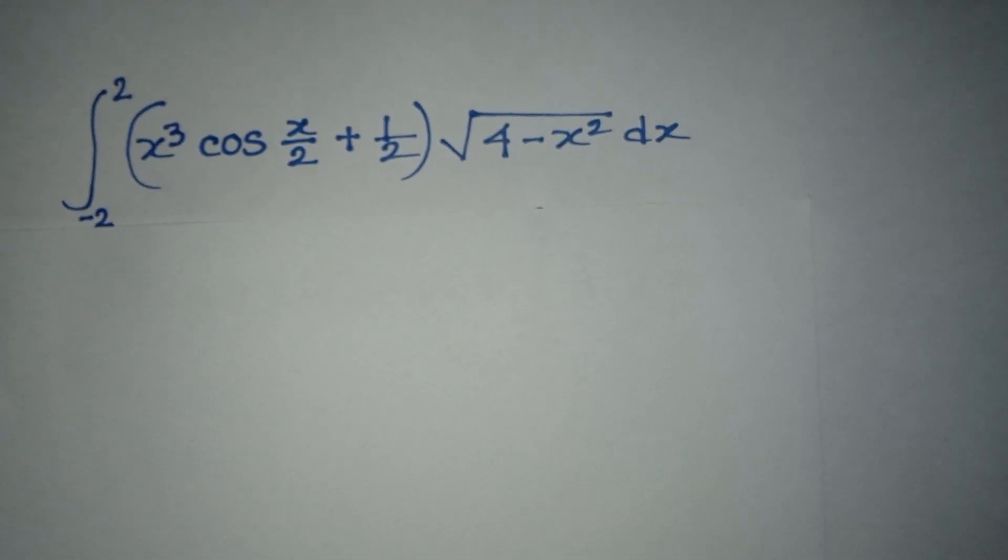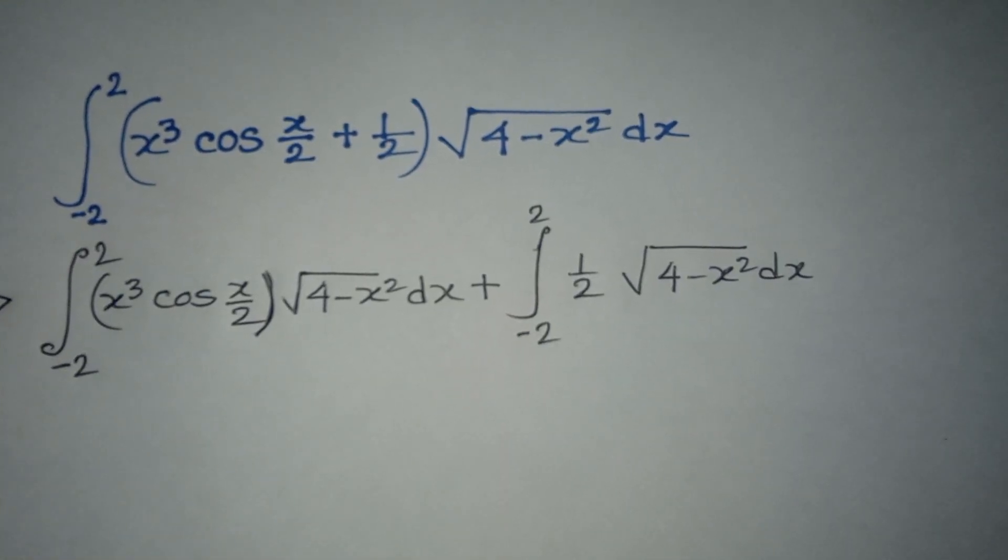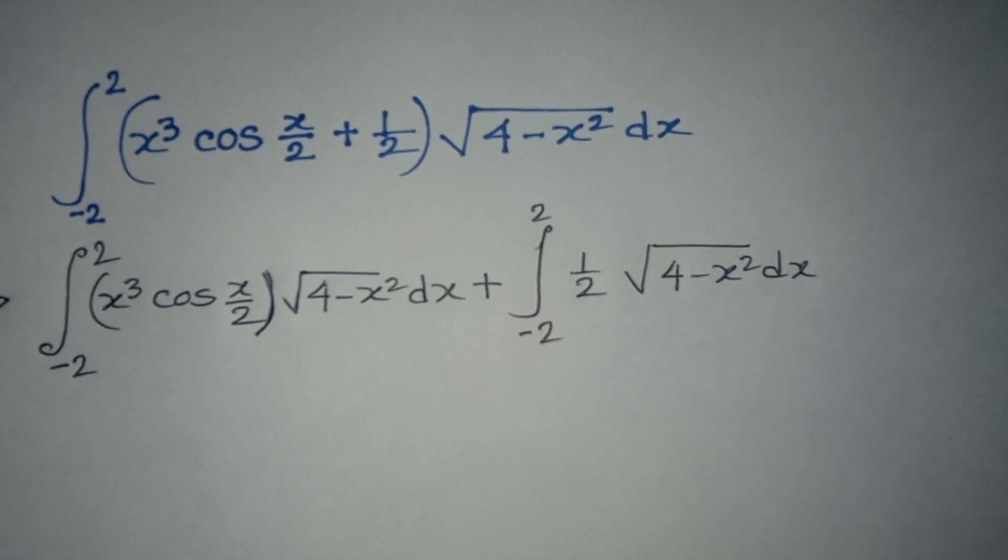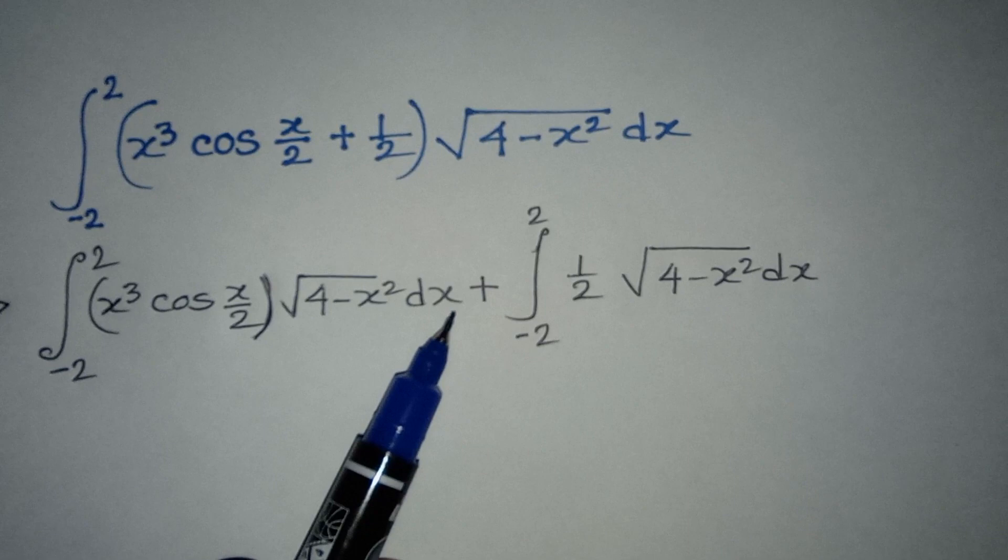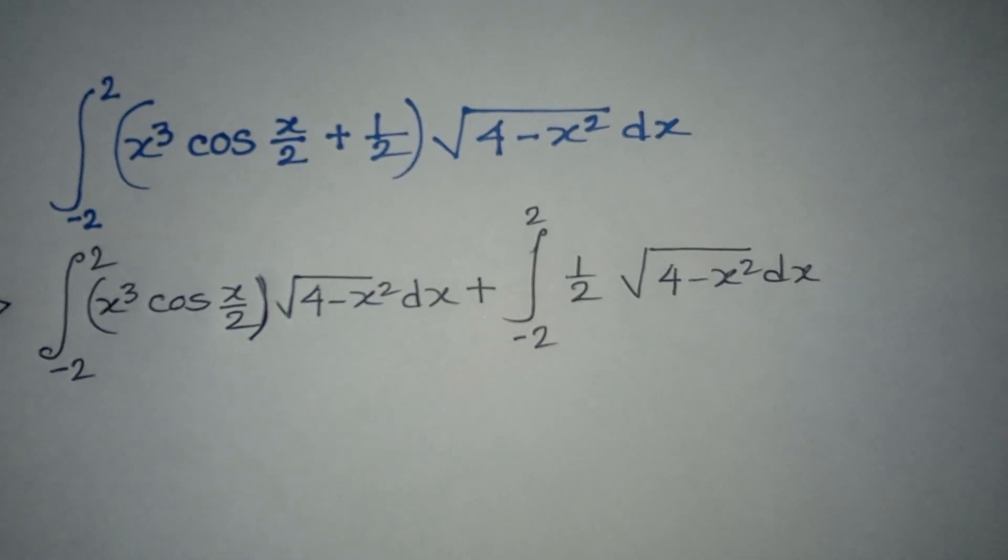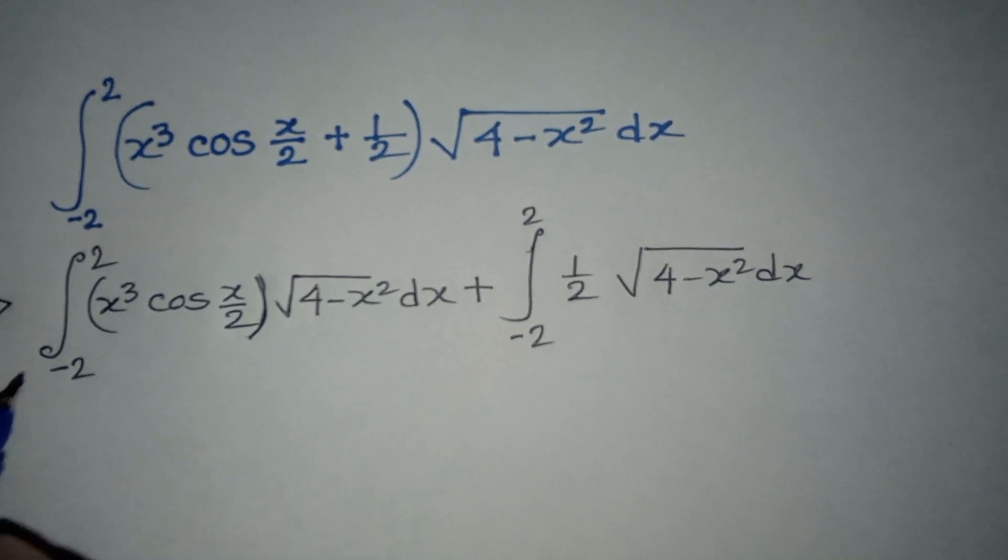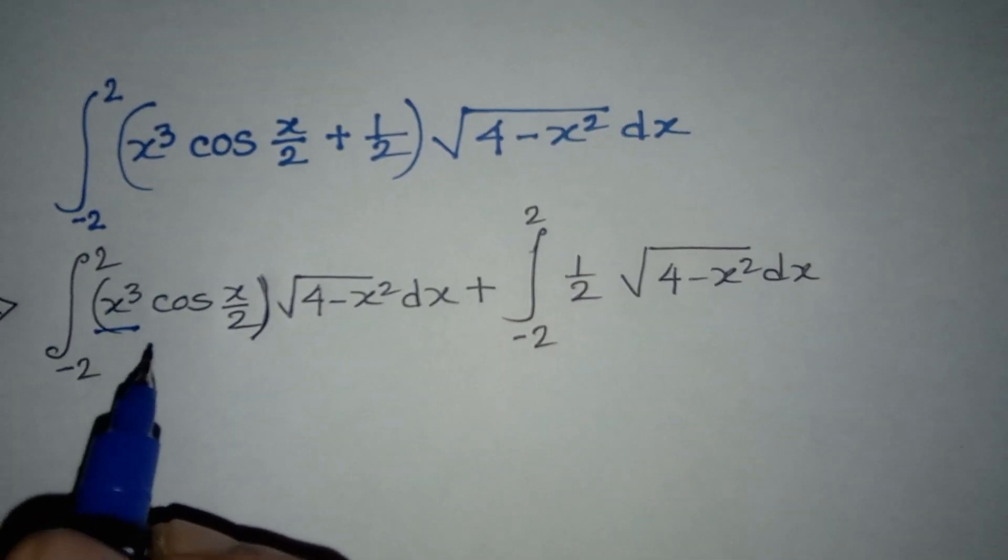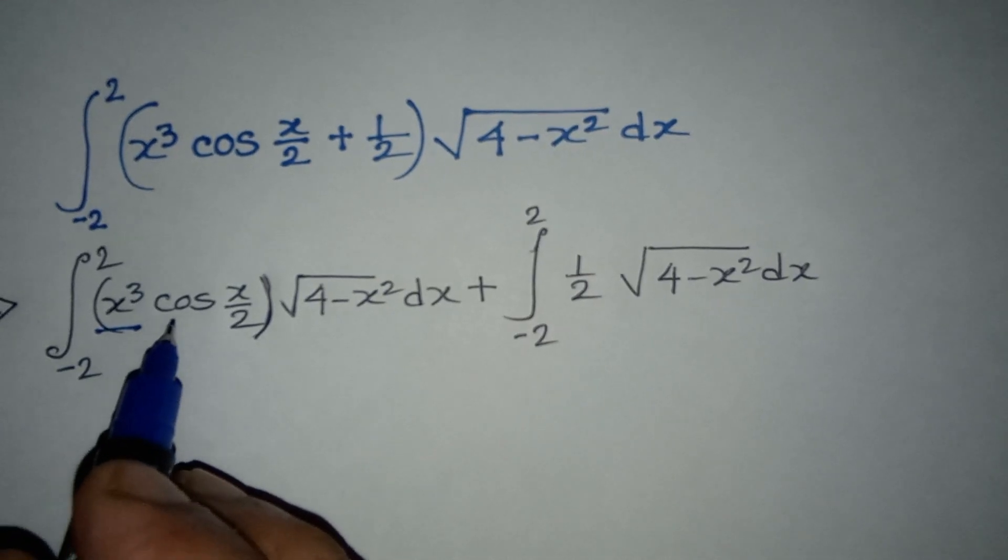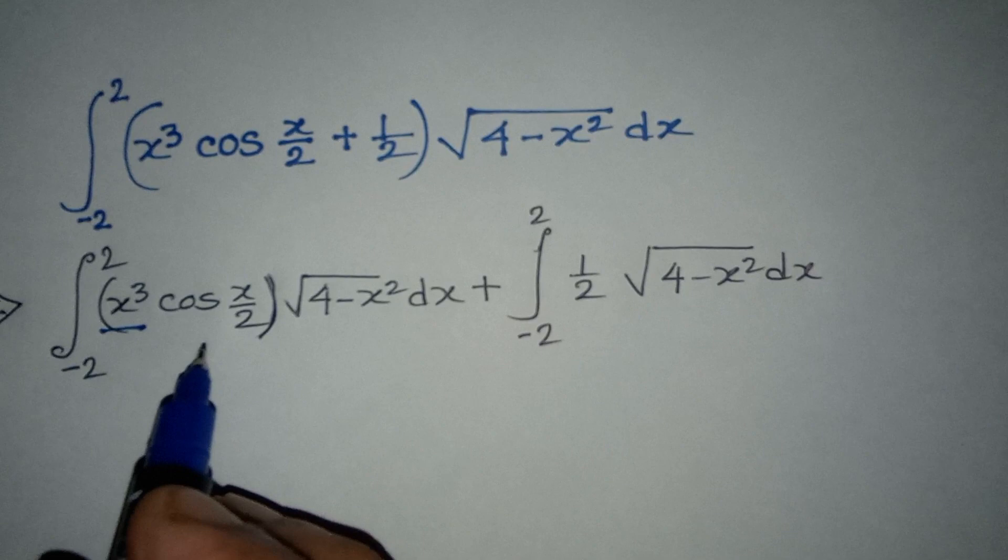We have two separate integrals now. Let's consider the first integral. This first part we can evaluate by considering even and odd functions. Here x³ is an odd function, cos(x/2) is an even function, and √(4-x²) is an even function.